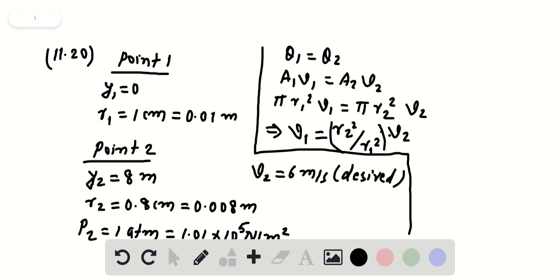So from here, we can calculate V1, which is R2 squared was 0.008 squared over 0.01 squared times 6. I'm skipping the units because everything I have converted into standard units. So from here, I'm going to get 3.84 meter per second.